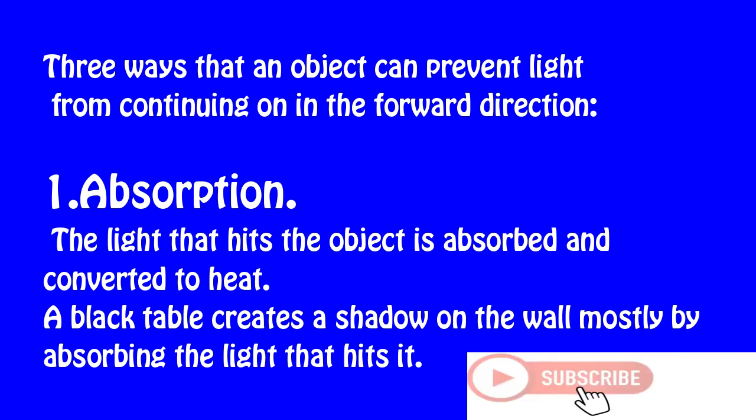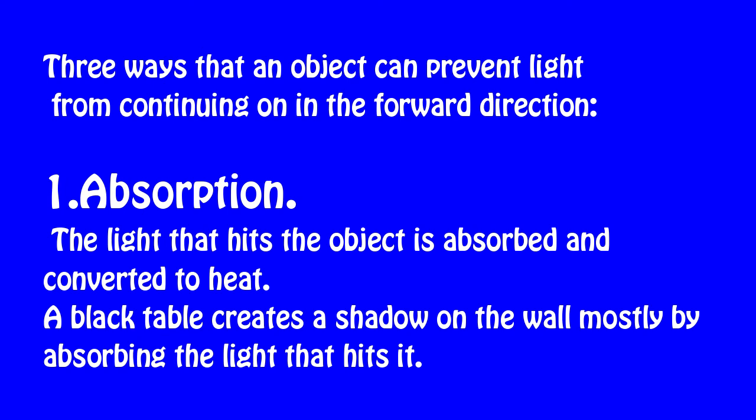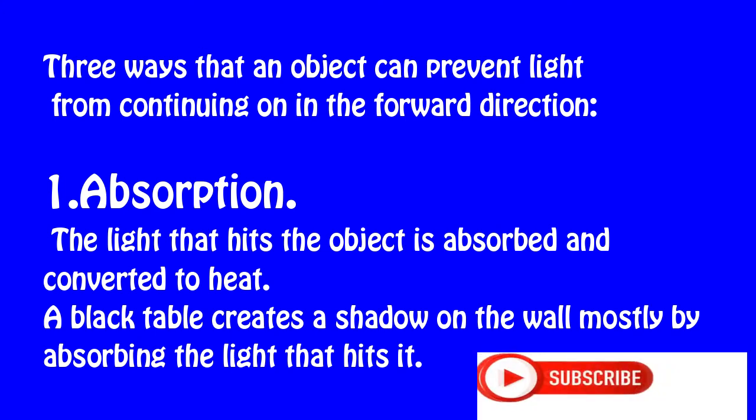The first way is absorption. The light that hits the object is absorbed and converted to heat. A black table creates a shadow on the wall mostly by absorbing the light that hits it.